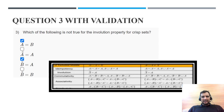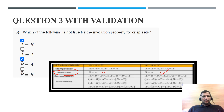Question 3: which of the following is not true for the involution property for crisp sets? As per the requirement, the involution property states that A double-complement equals A. This is valid for both crisp sets and fuzzy sets. From the options, A double-complement equals A and B double-complement equals B are cases of the involution property.